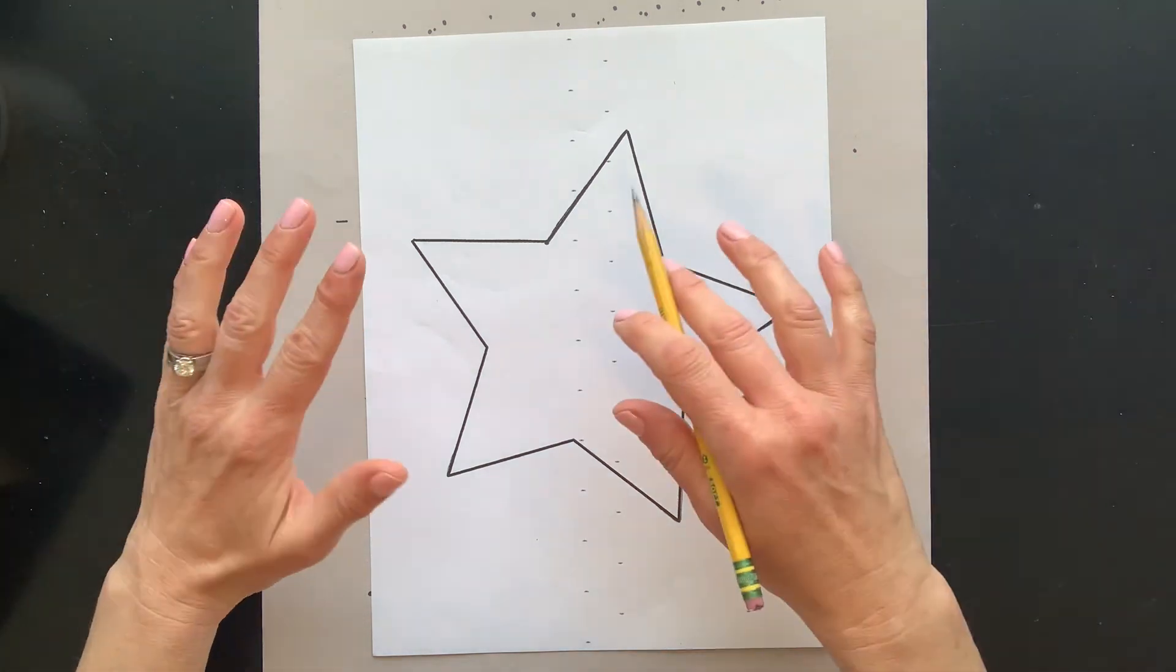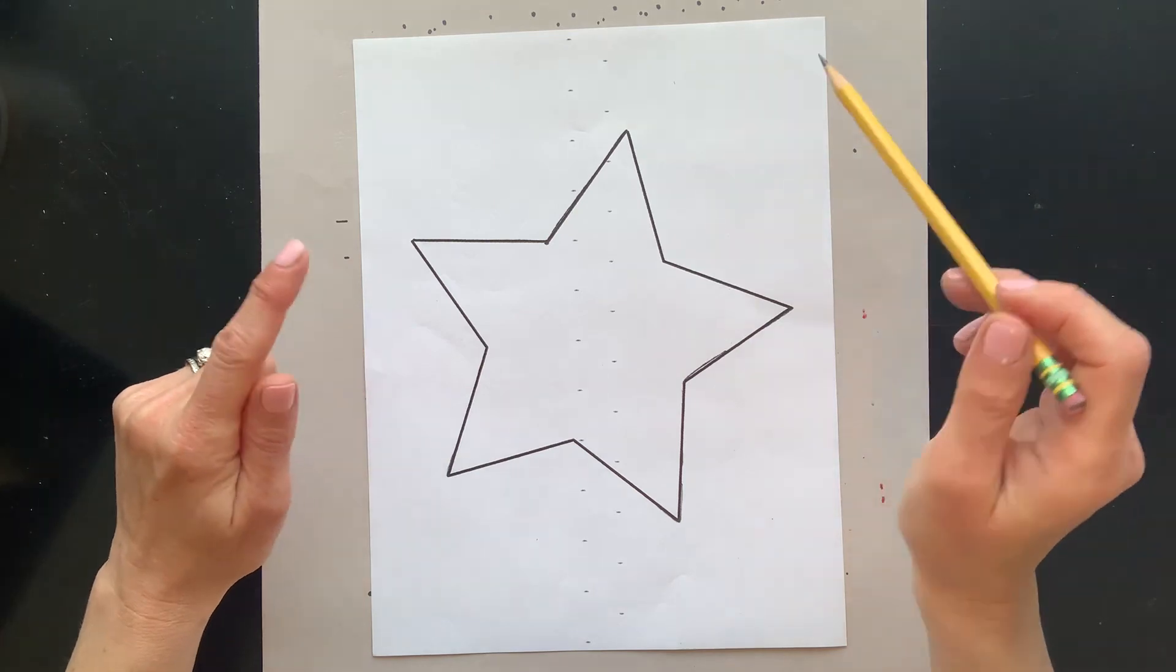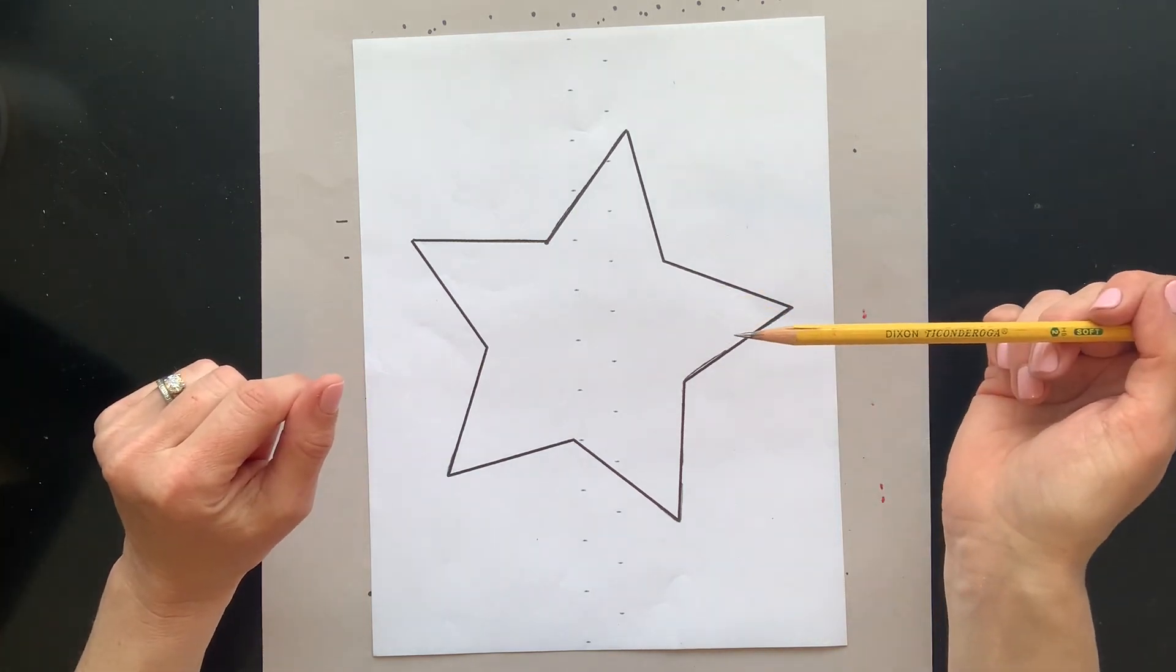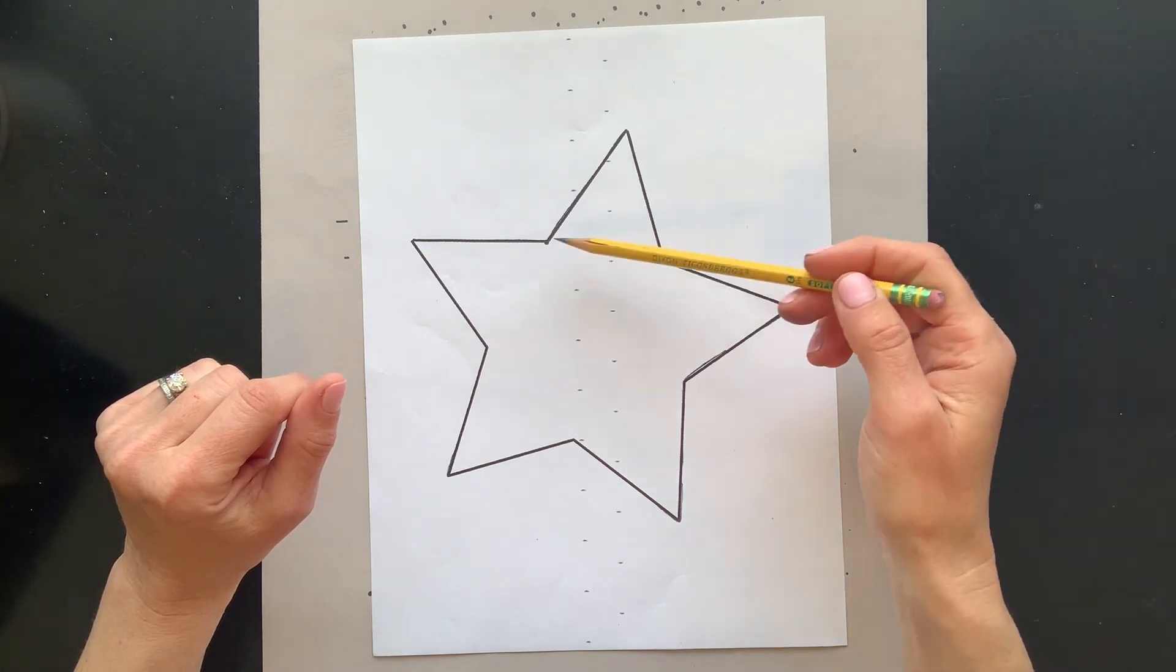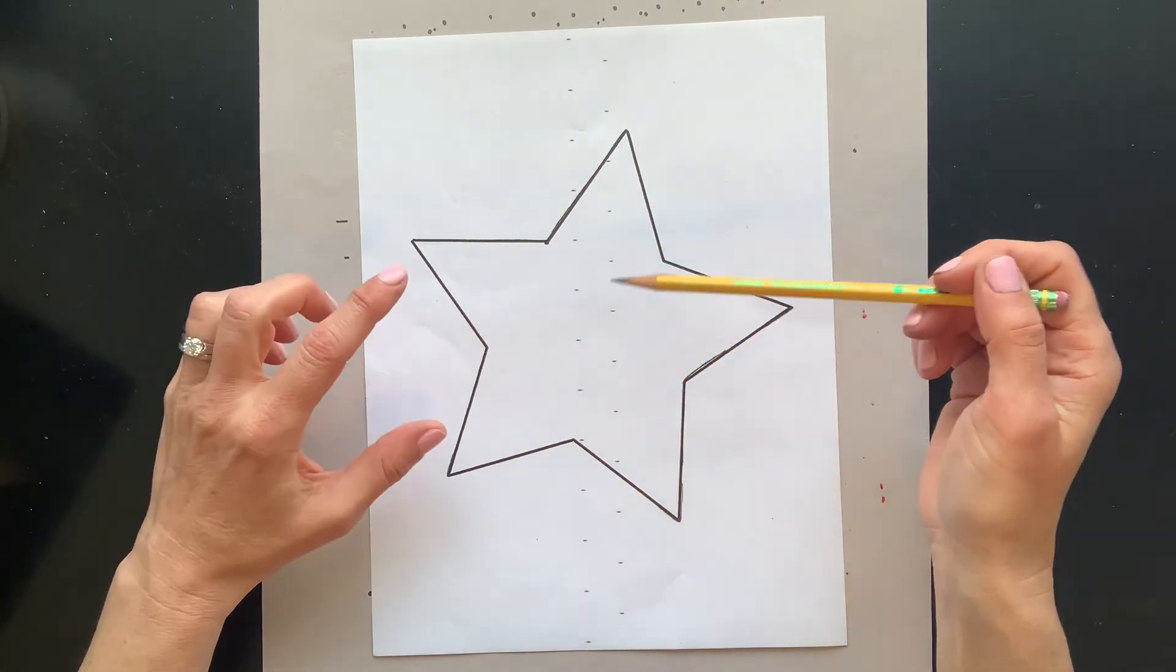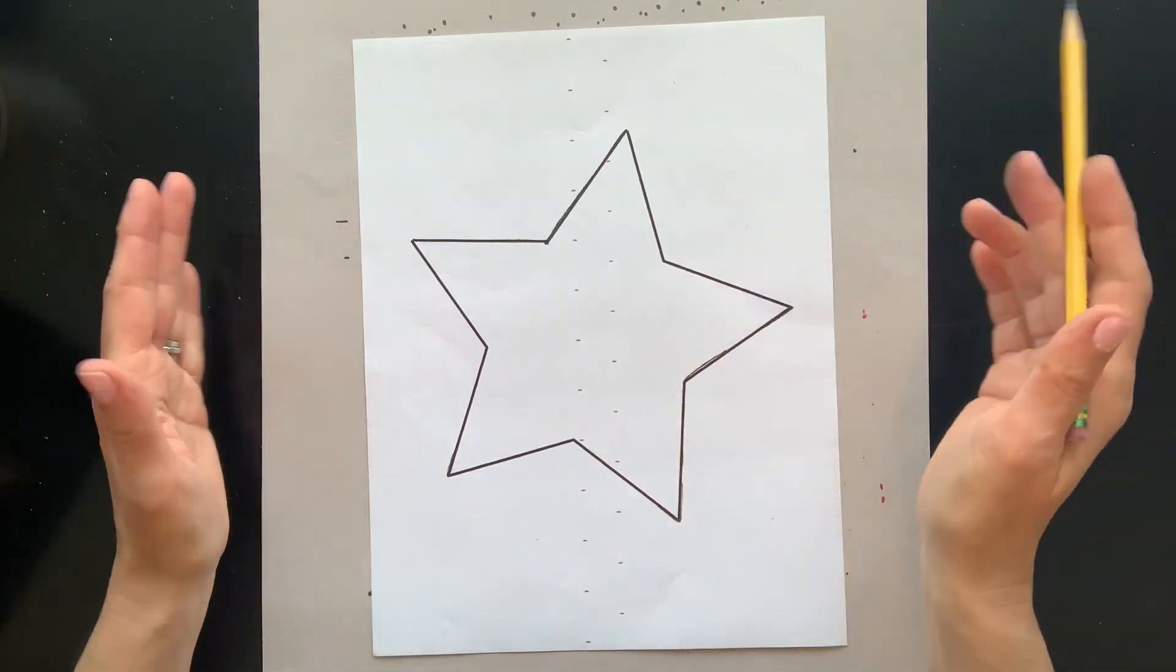But the first thing we need to do is get our drawing planned out. You can either print out this example that I have for you on Google Classroom, or you can go on Google and find a star template and then just draw it on your paper really large. You want most of your picture to be star.